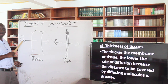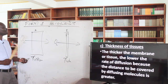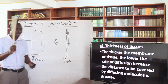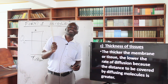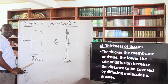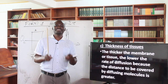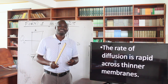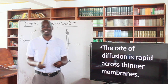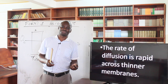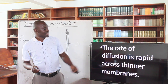For molecules to move across the thick tissue, they require more time; across the thin tissue, they require less time. So the rate of diffusion will be faster in B than in A. The thicker the membrane or tissue, the slower the rate of diffusion, because the distance to be covered by the diffusing molecules is greater. The rate of diffusion is rapid across thinner membranes, such as epithelial tissues, which are very thin, so particles cross in a shorter time.